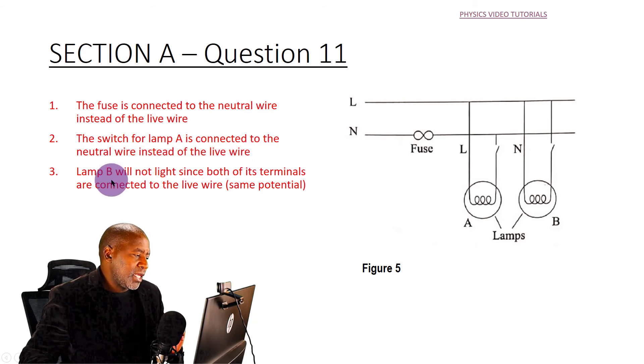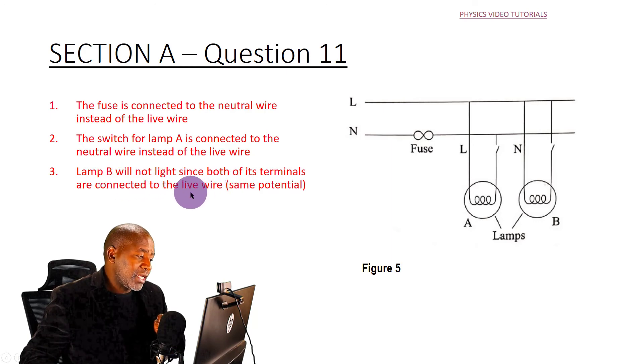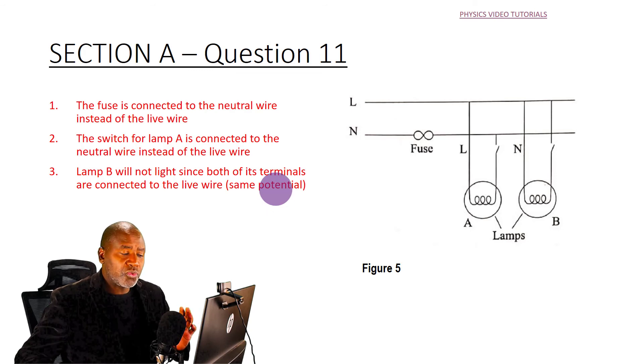And number three: lamp B will not light since both of its terminals are connected to the live wire at the same potential, making the potential difference across the lamp zero. Therefore, there will be no current flowing through the lamp, because there must be a potential difference across the component for it to work.